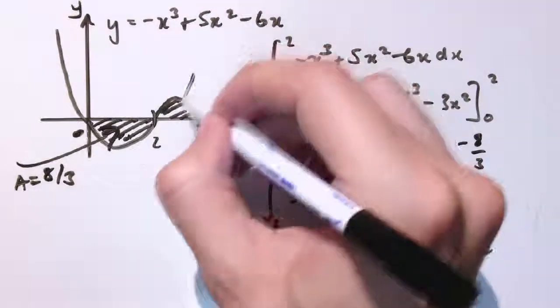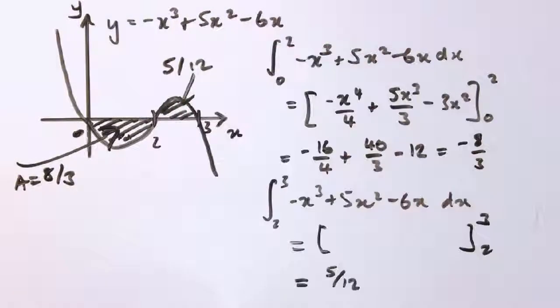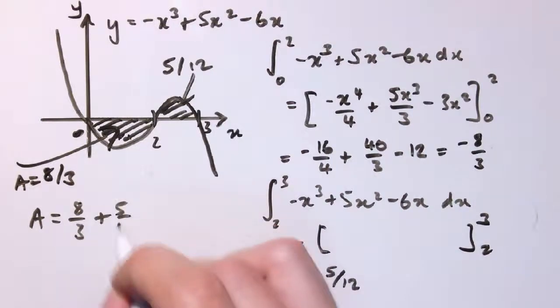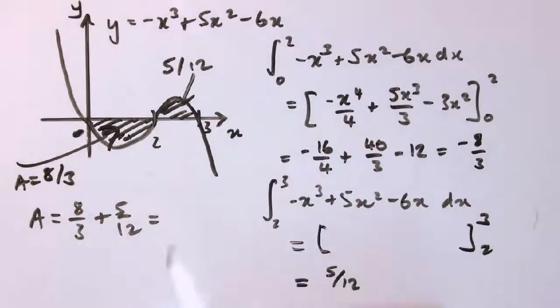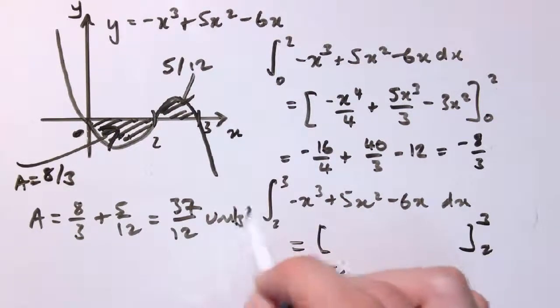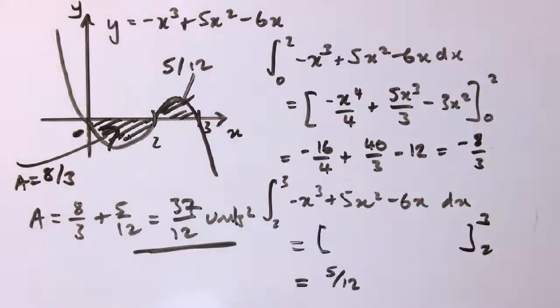So this area here is 5/12, and I've answered the problem because the area is this plus this. So the area is 8/3 + 5/12, and that's 37/12 units². And that's the correct answer and that's what we need to do here to work out the area.